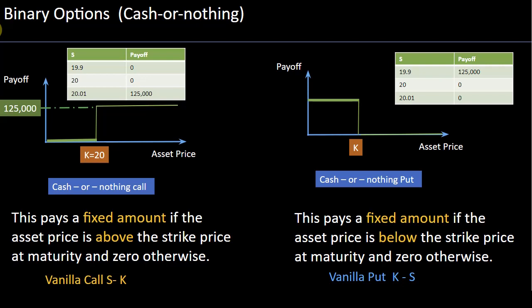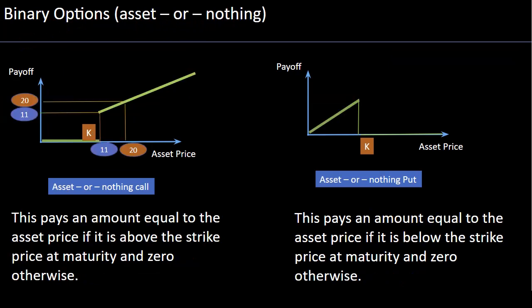In this section we are going to have a look at a particular exotic option called binary options. There are mainly two types of binary options: the first one is called cash-or-nothing binary options, and the other is called asset-or-nothing binary options.